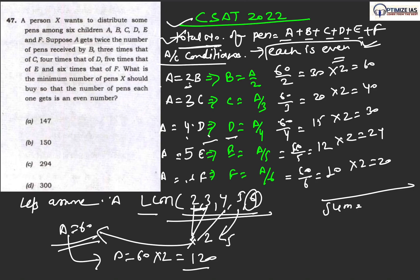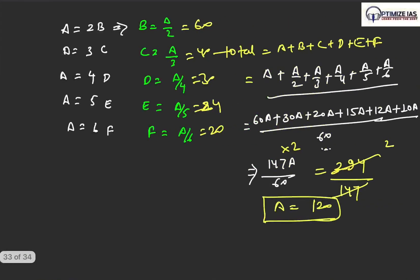Now we will sum all these things. So this comes as 60, 40 and 20 is 120, then 30 and 20 is 50, so 120 plus 50 is 170. 170 plus 24 is 194 of A. Wait, 120 plus 60 plus 40 plus 30 plus 24 plus 20. So 294 is the answer.